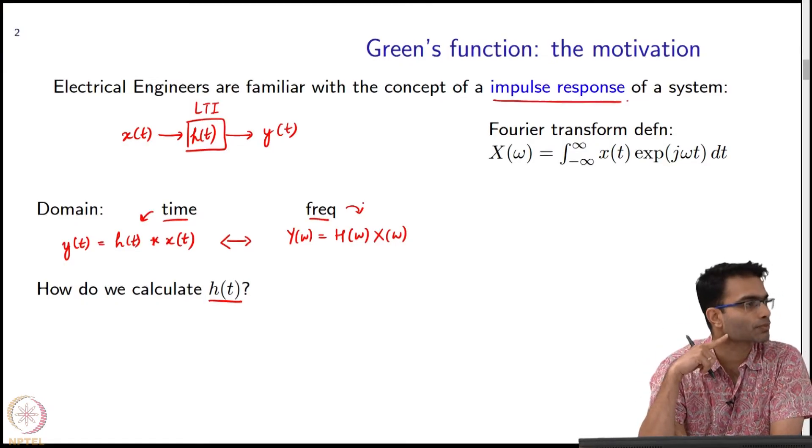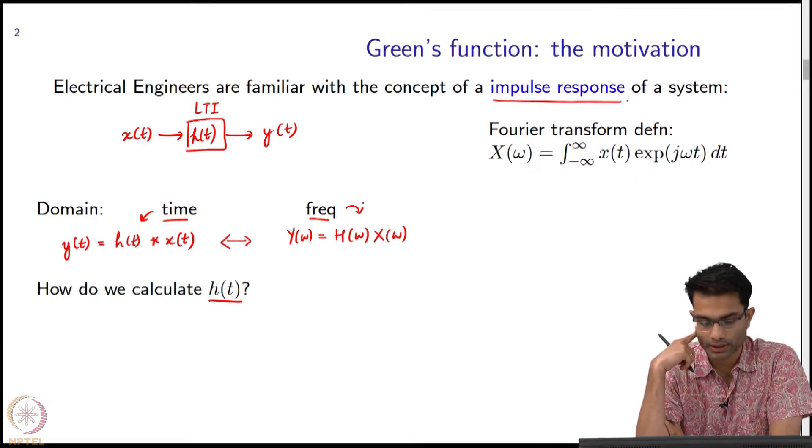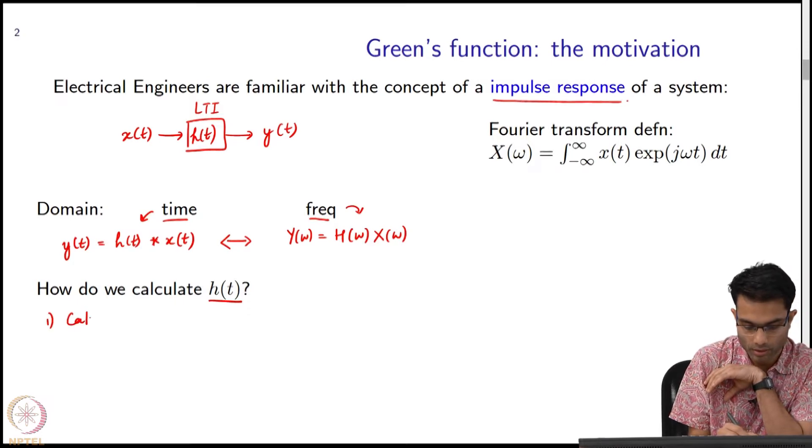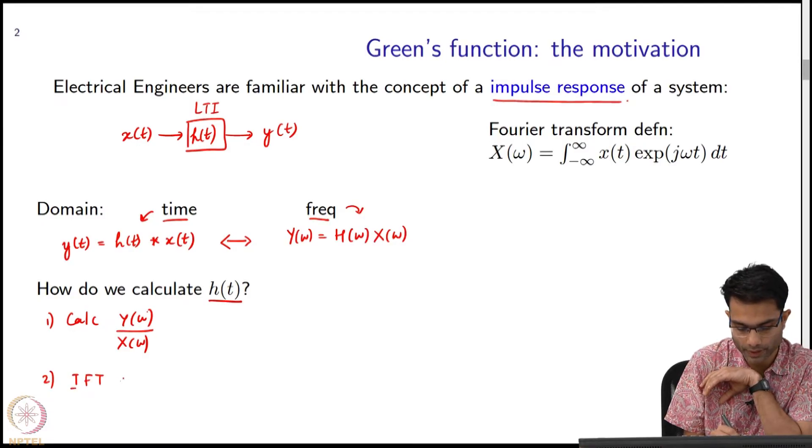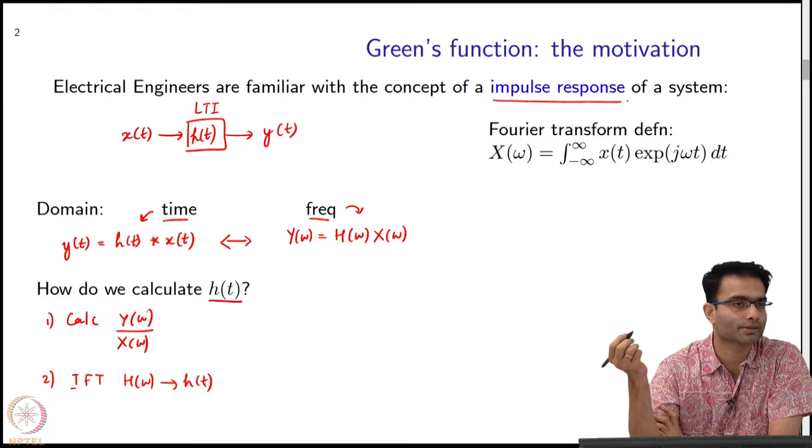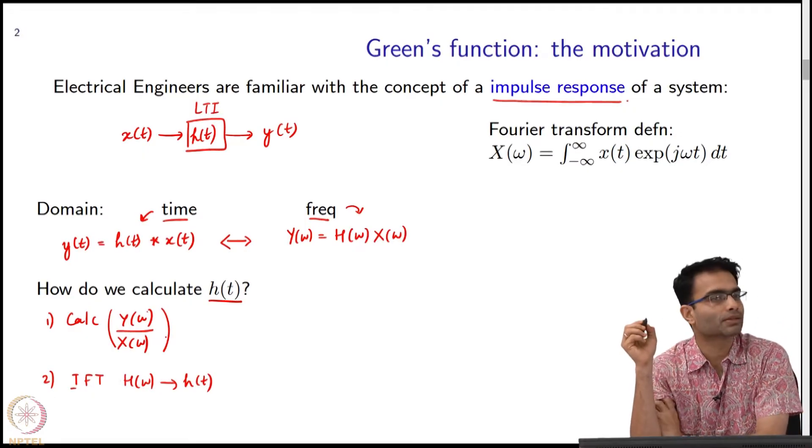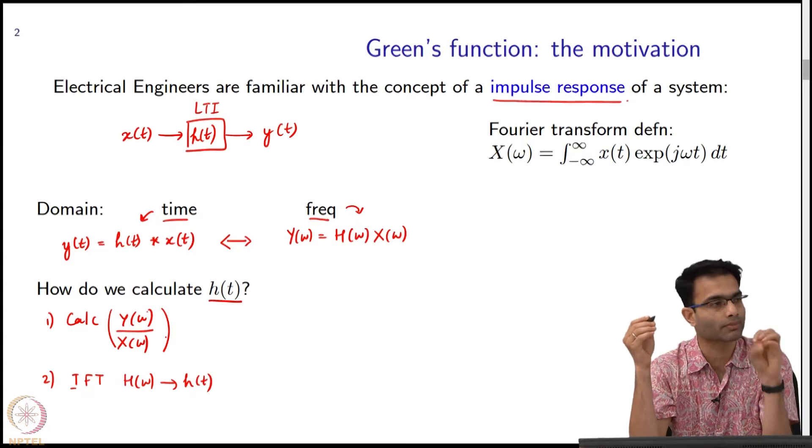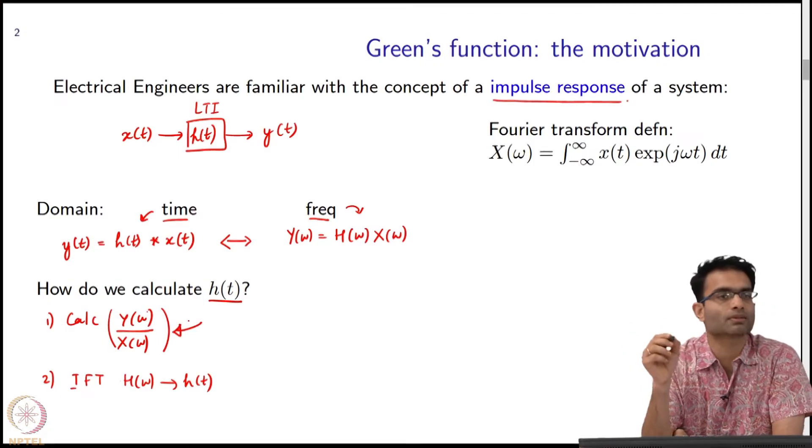The question is, how would I calculate h(t)? What kind of procedure would you follow for calculating the impulse response of a system? Y(ω) divided by X(ω), and take the inverse Fourier transform. In other words, we will first calculate y(ω) for a known input x(ω), and second, do an inverse Fourier transform. That will take h(ω) to h(t), or I can stay in h(ω) in the omega domain itself if all my calculations are going to be done in the frequency domain.